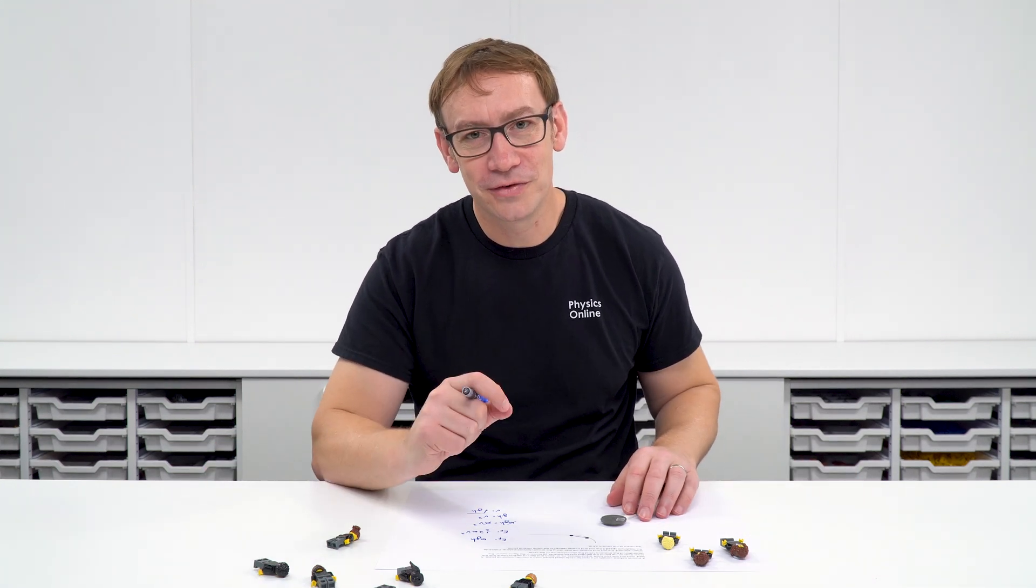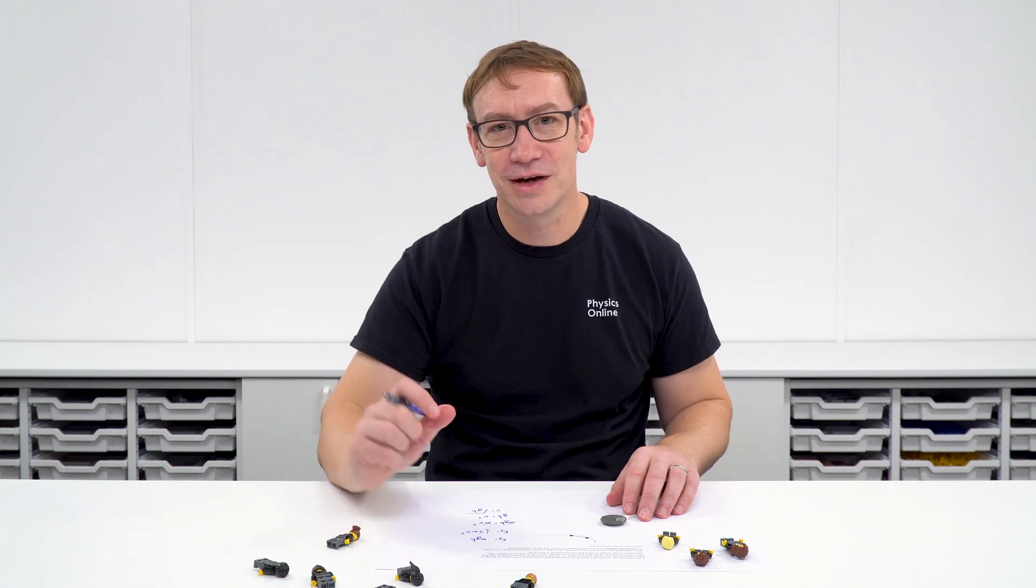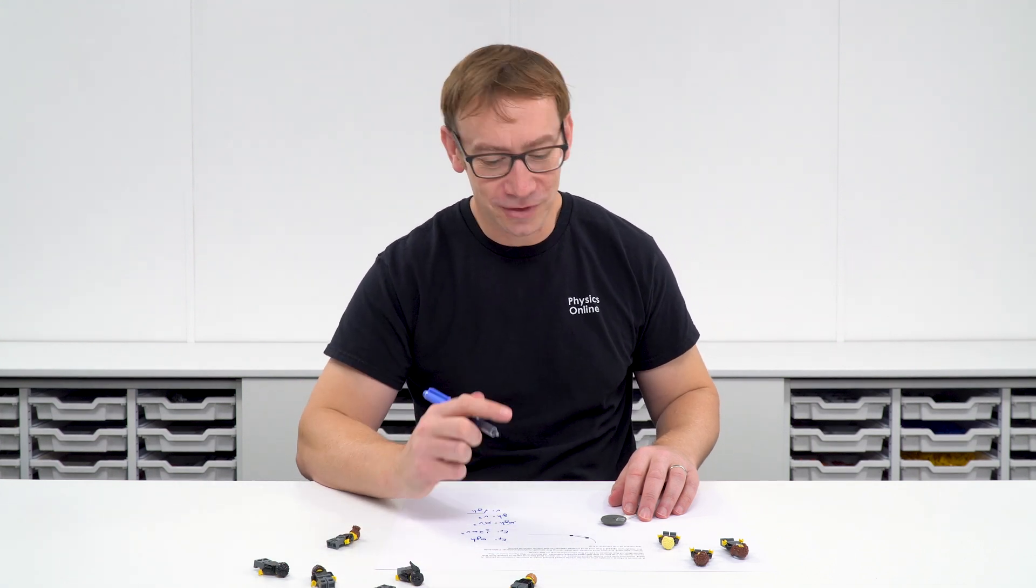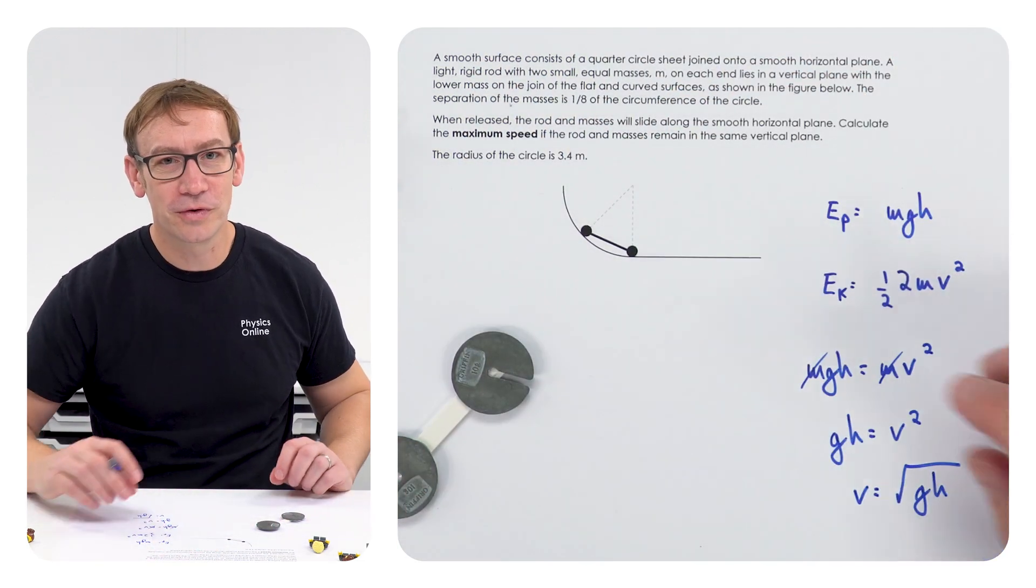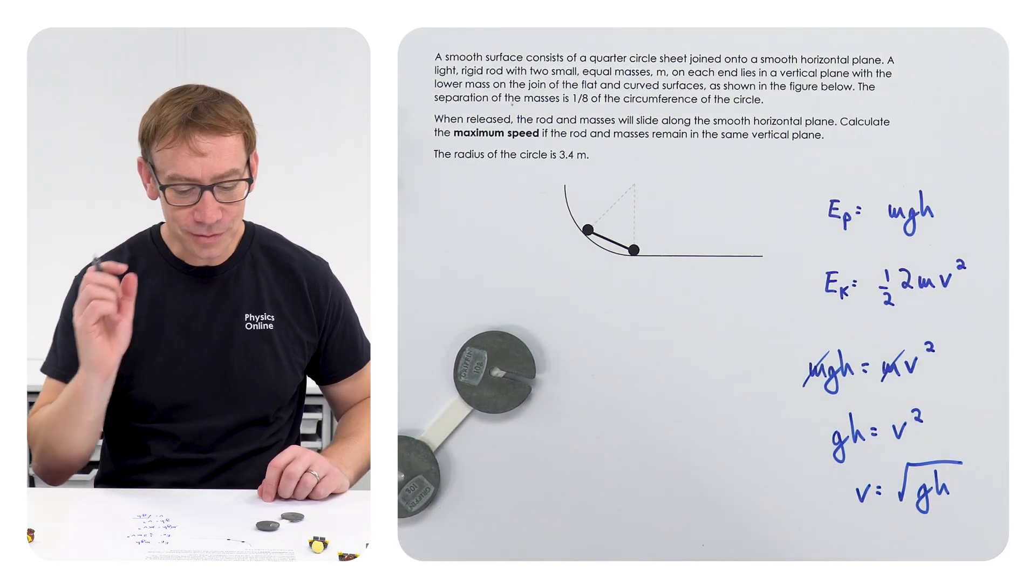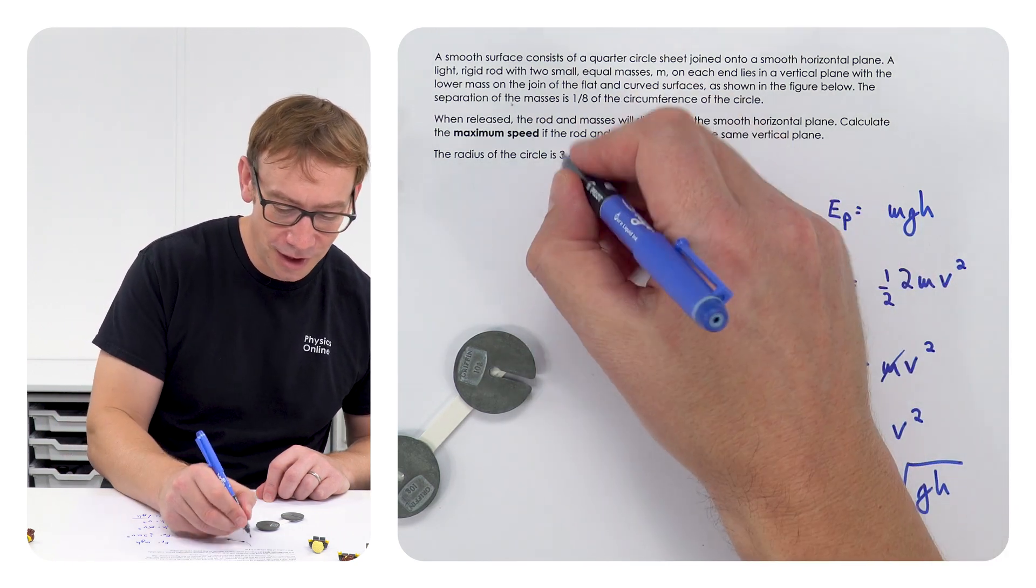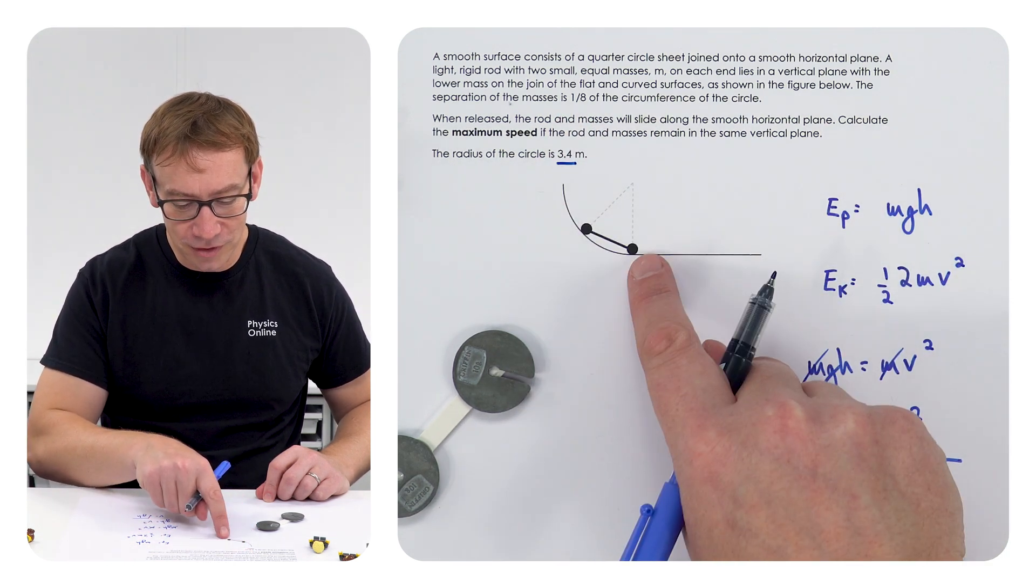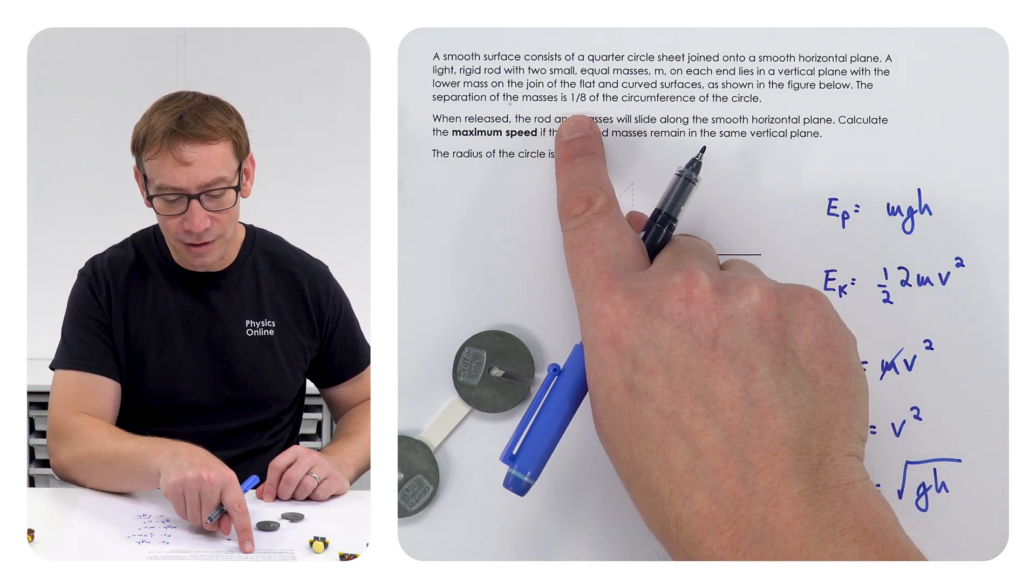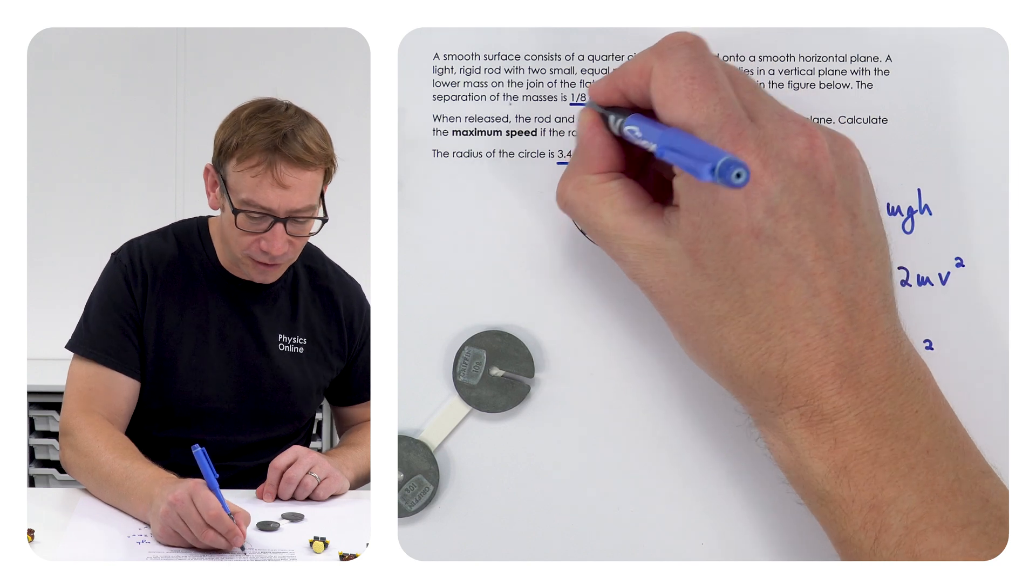Well that's where I think most students, the 70% who couldn't answer this question, that's where they made a mistake, because they couldn't work out how high this was. That's because looking in the question there wasn't much information there. But the two things I thought were important was the radius of the circle and also that the separation of the masses is equal to an eighth of the circumference of a circle.